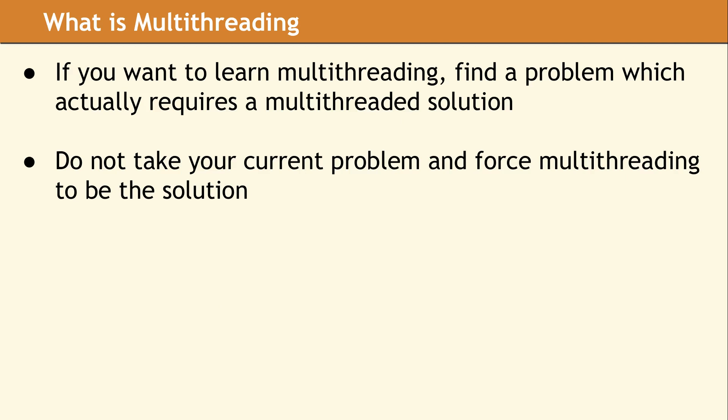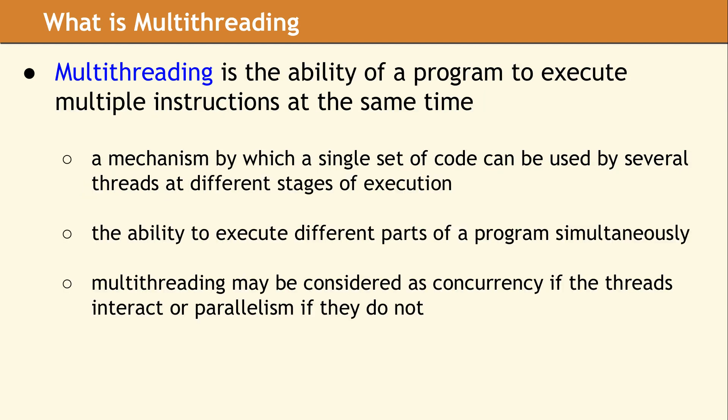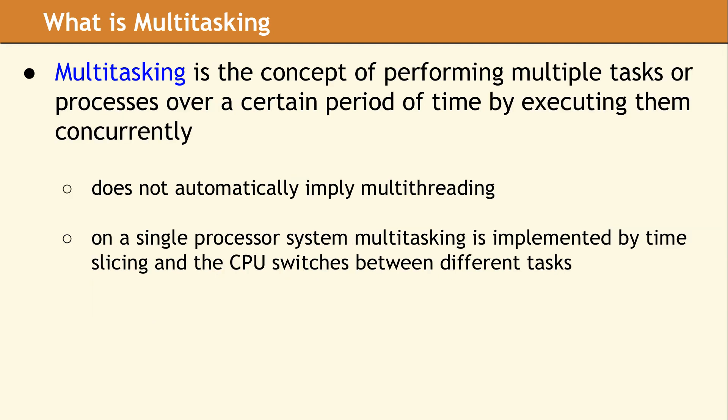Multithreading should be used when it is the only way to meet your design requirements. This means that in order to learn good multithreaded design, you will need to be working on a problem which has a good multithreaded solution. The actual definition of multithreading is very straightforward — it is simply the ability of a program to execute multiple instructions at the same time. This typically implies the ability for different parts of a program to be executing simultaneously. As a comparison, multitasking occurs when you have a set of tasks completed over some period of time, and does not imply that these tasks are actually executing simultaneously — they may compete for time on a single processor.